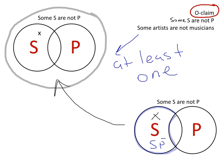That's the categorical claim of the form some S are not P. Now, you need to know how to do all four of these standard categorical claims. You need to know how to diagram these correctly.